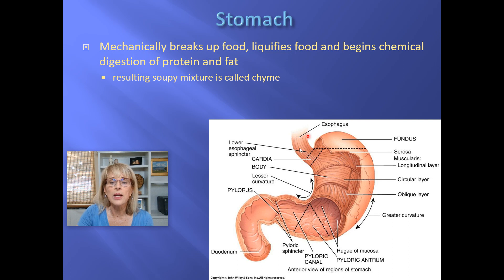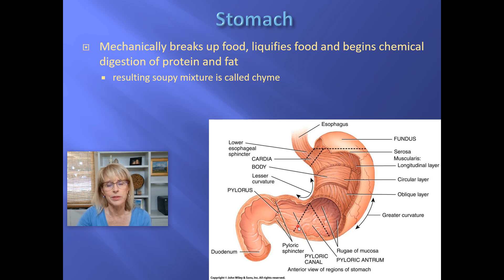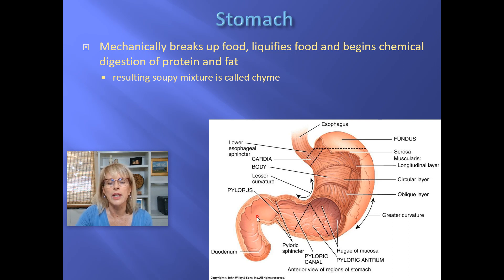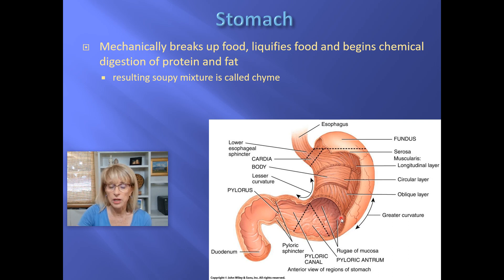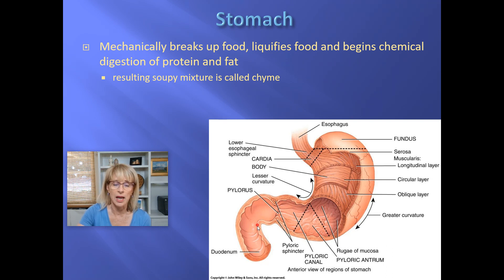Unlike the lower esophageal sphincter, the pyloric sphincter is really good at its job — sometimes too good. Its job is to make sure that the acidic contents of the stomach only get squirted into the small intestine in very small amounts at a time. This is because the mixture is dangerous, and if it were allowed to pour freely into the small intestine, it would significantly damage it.